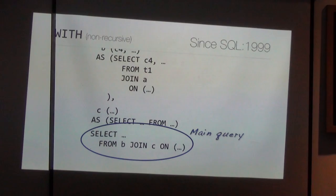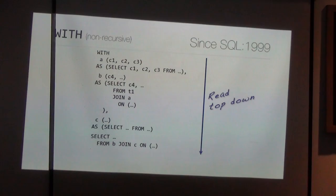It's not persisted in the database and not shared across other selects. It's just for the one select it is a prefix for. You can also make code reusable because you can refer to A, B, or C more than once.